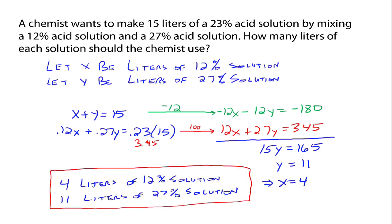So we need 4 liters of the 12% solution and 11 liters of the 27% solution in order to make 15 liters of a 23% acid solution. Let's do one more example.